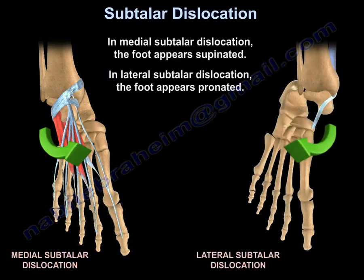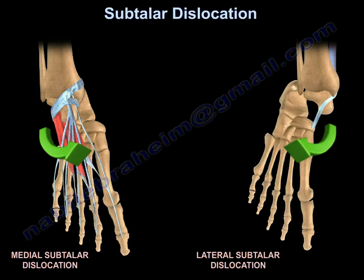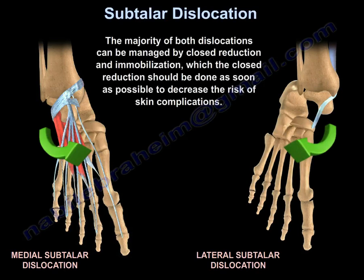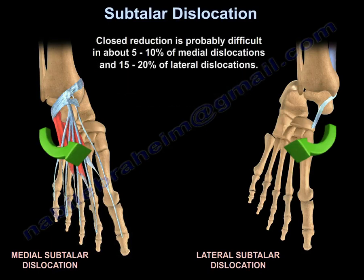In medial subtalar dislocation, the foot appears supinated. In lateral subtalar dislocation, the foot appears pronated. The majority of both dislocations can be managed by closed reduction and immobilization, which should be done as soon as possible to decrease the risk of skin complications. Closed reduction is difficult in about 5–10% of medial dislocations and 15–20% of lateral dislocations.